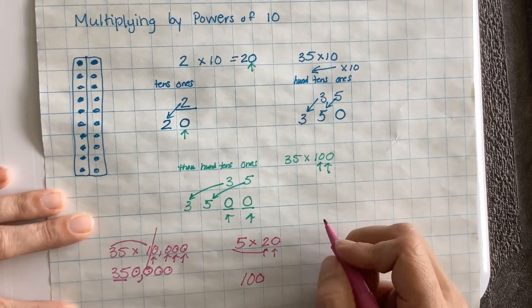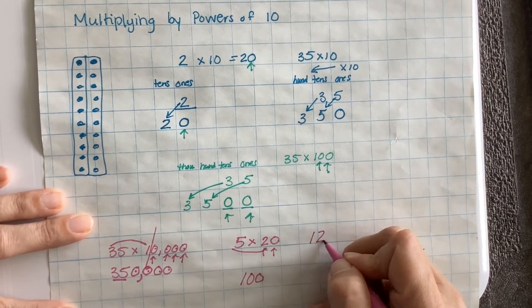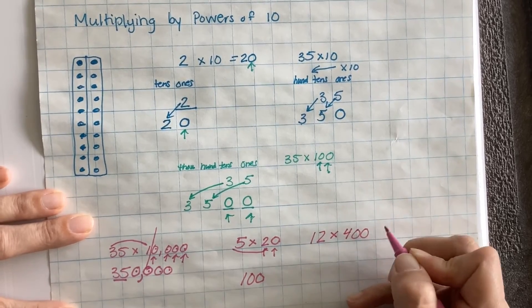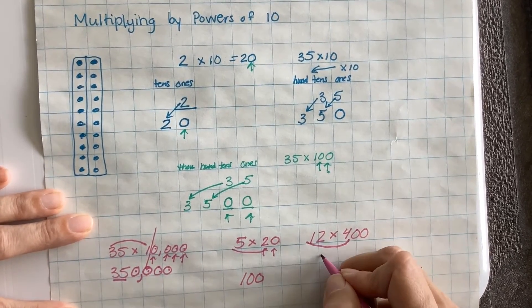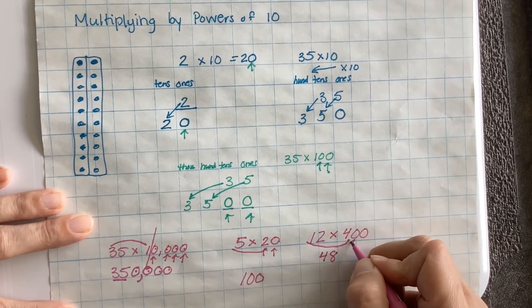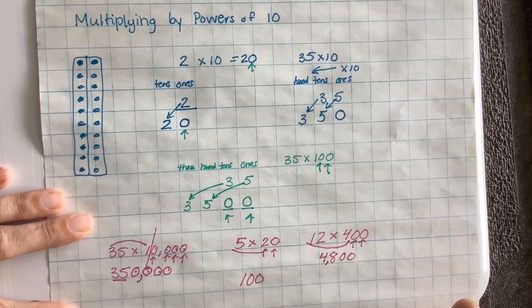Let's try it with an even bigger number. We can do, let's say, 12 times 400. So 12 times 4, 12 times 4 is 48 with 1, 2 powers of 10. So 12 times 400 is 4,800.